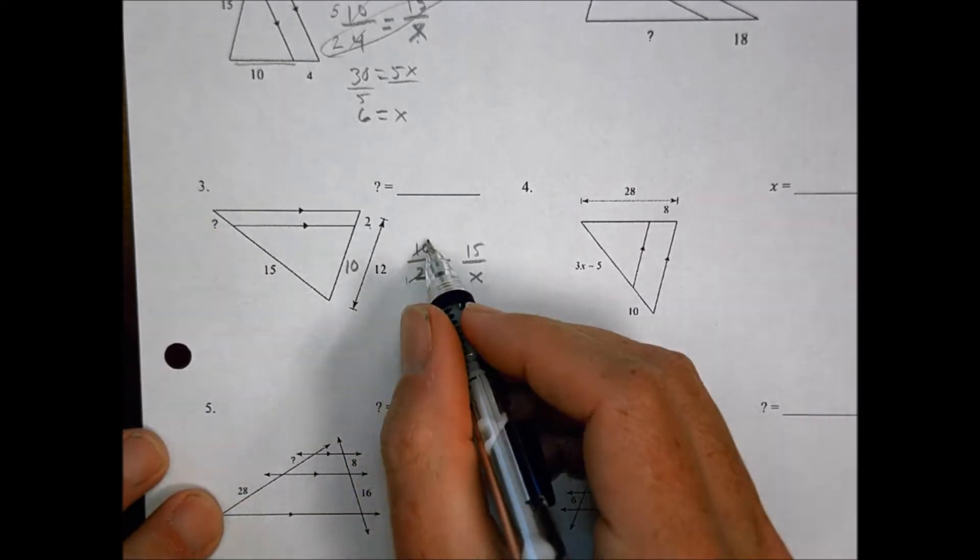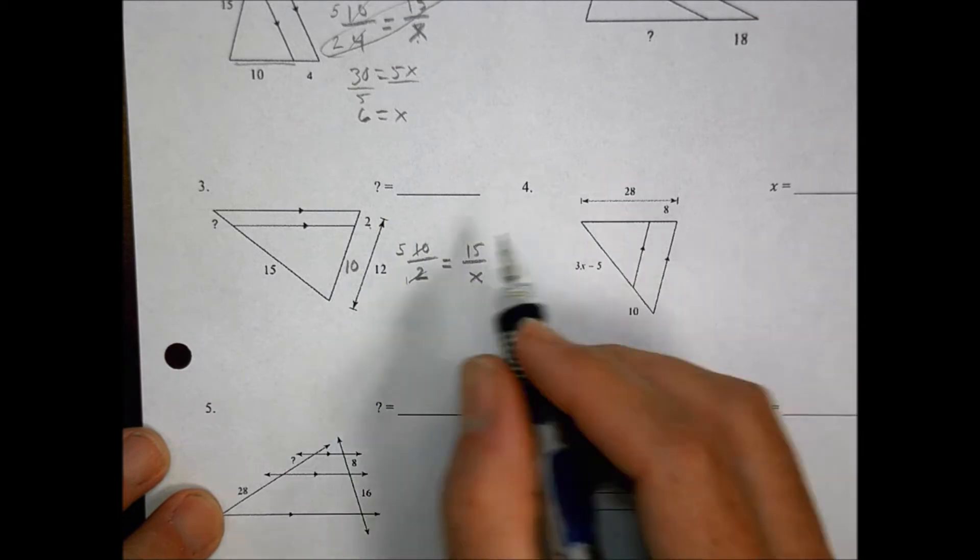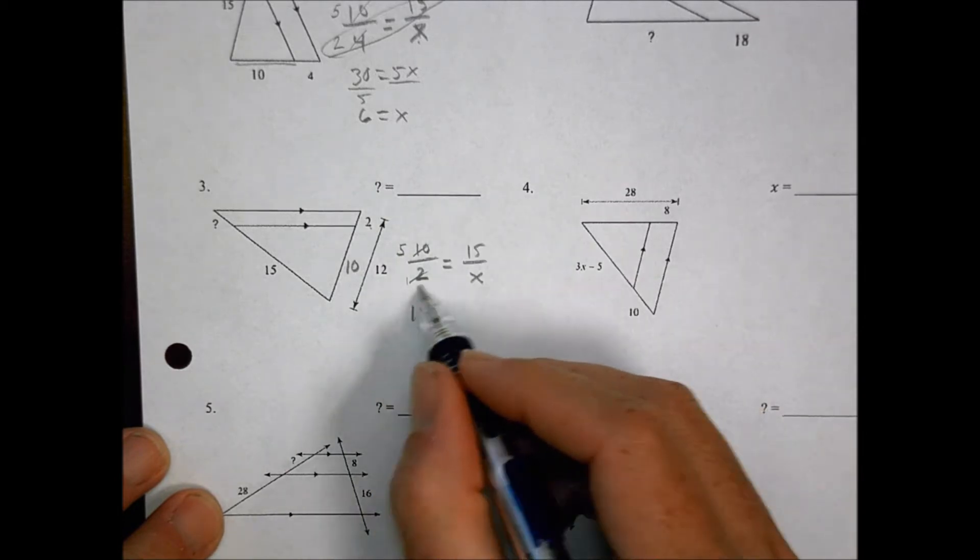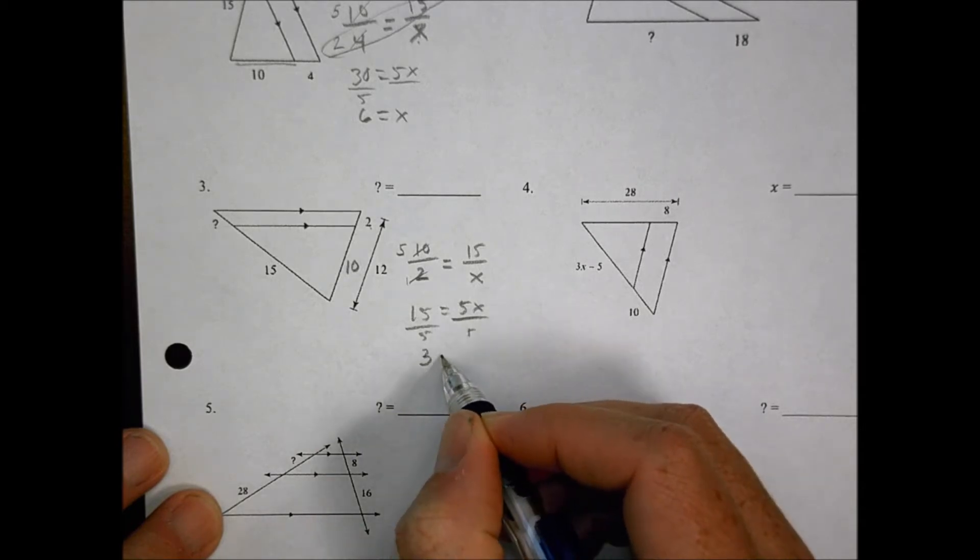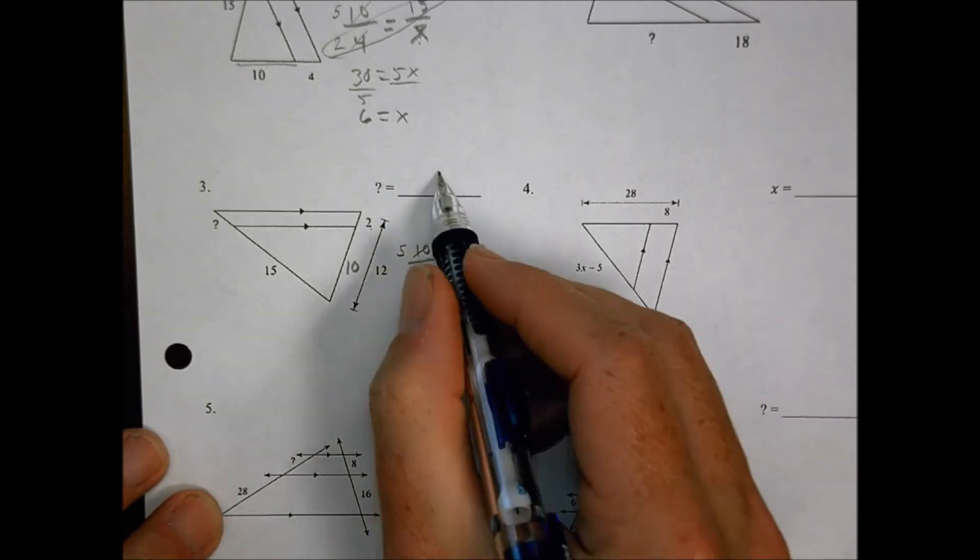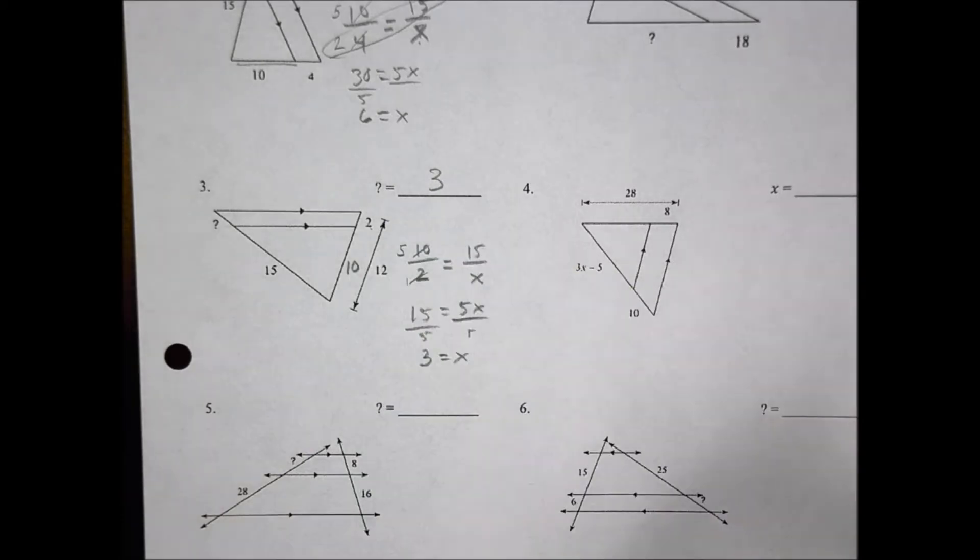Again, 2 goes in here 1 time, 2 goes in here 5 times, so I can reduce, and so 15 is going to equal 5x. Divide both sides by 5, 15 divided by 5 is 3, and so x equals 3 for number 3.